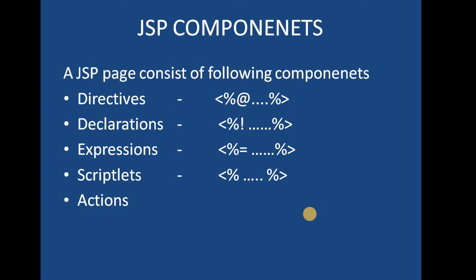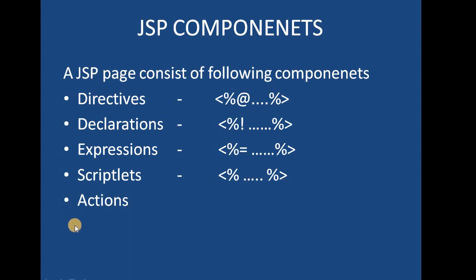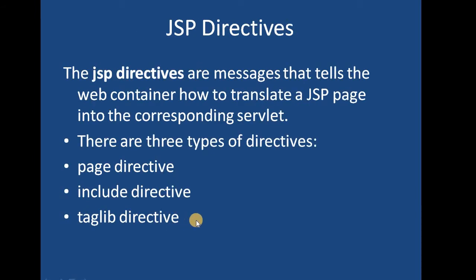A JSP page consists of the following components — not necessarily all are included, but most commonly we use almost all of them. One is directives, written inside special symbols where the at-rate symbol indicates it is a directive tag. Then we have declarations, where the exclamation mark with the starting tag indicates a declaration. Expressions are indicated by an equal-to sign with the starting tag. Scriptlets are written in the normal opening and closing tags. Then we have actions. There are three types of directives: the page directive, the include directive, and the taglib directive.